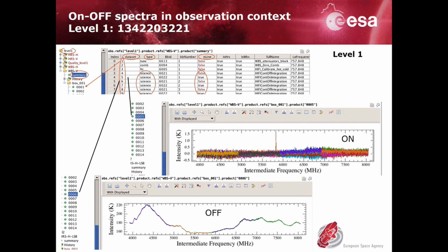In our example, amongst the science datasets, number 5 is the On spectra, number 6 is the Off spectra, and so on.